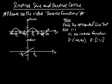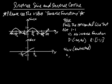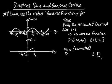We want to restrict the domain of sine in such a way that two things are satisfied. We'll call this 'sine restricted.' First, the function must be one-to-one. Second, we still want the range to be negative one to one.